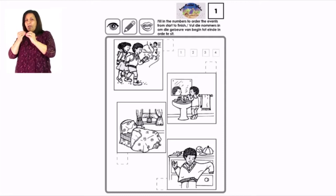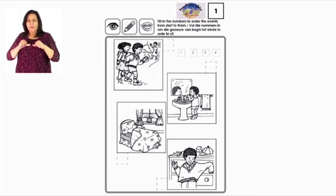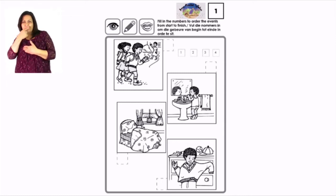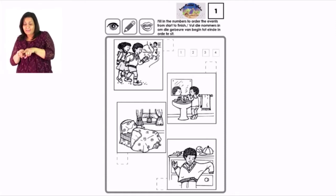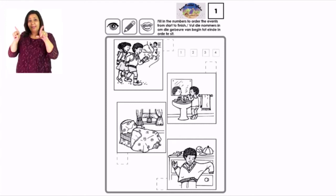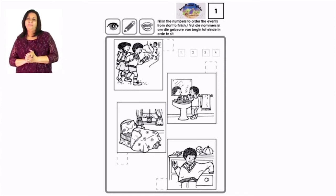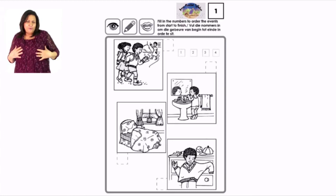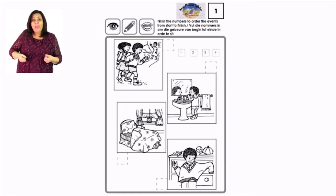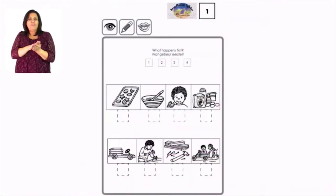Write number two next to the picture where the little boy is brushing his teeth in the bathroom. After brushing teeth and bathing, you get dressed — that is picture number three. Write number three in the box next to that picture. When the boy is ready, the last picture — children walking to school — is number four, right at the top of the page.